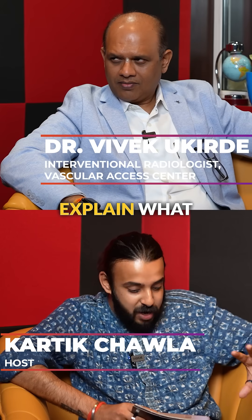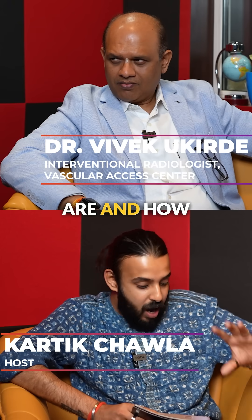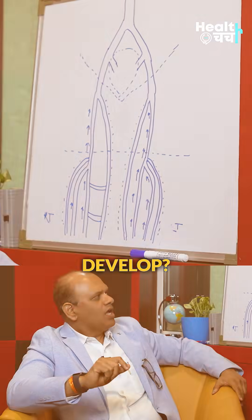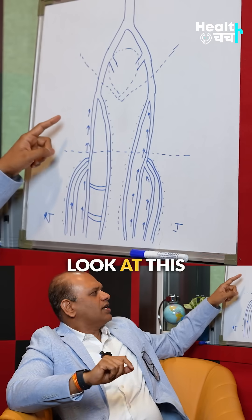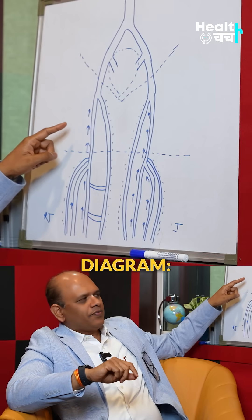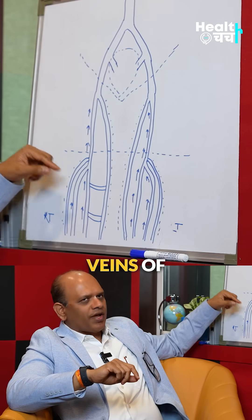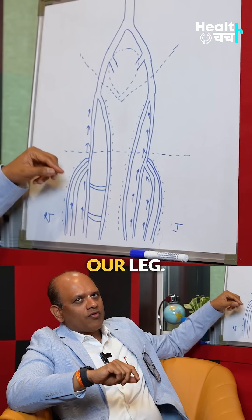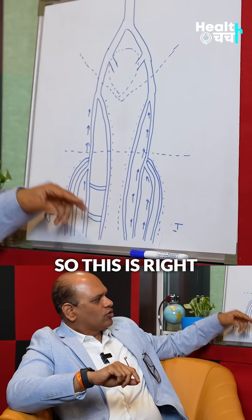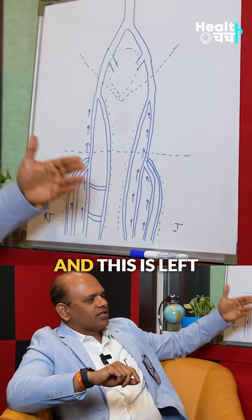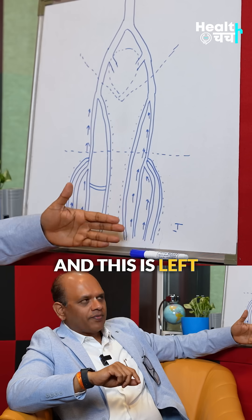So doctor, could you just explain what varicose veins are and how they develop? So you can look at this diagram. These are the prominent veins of our leg. So this is right and this is left.